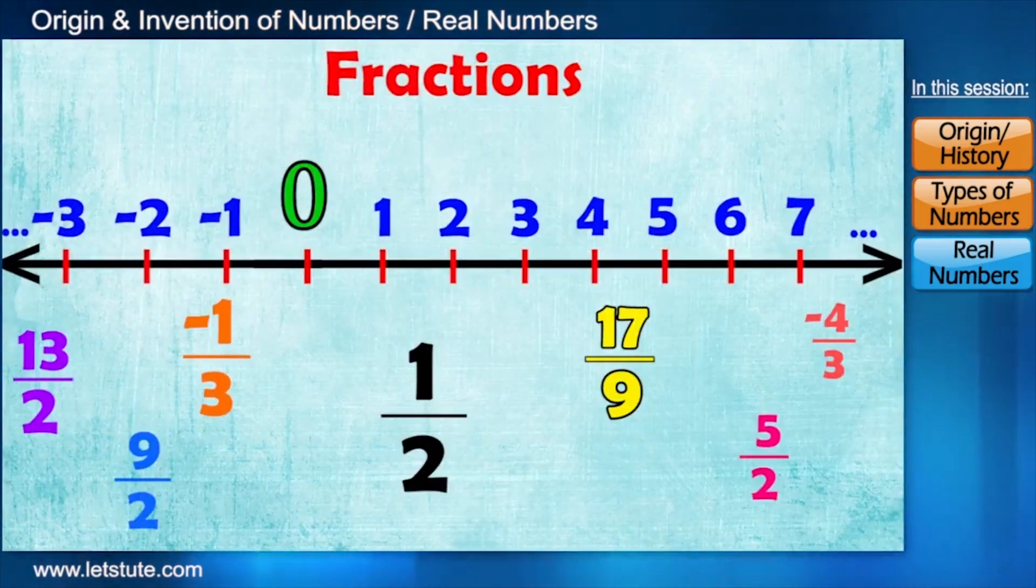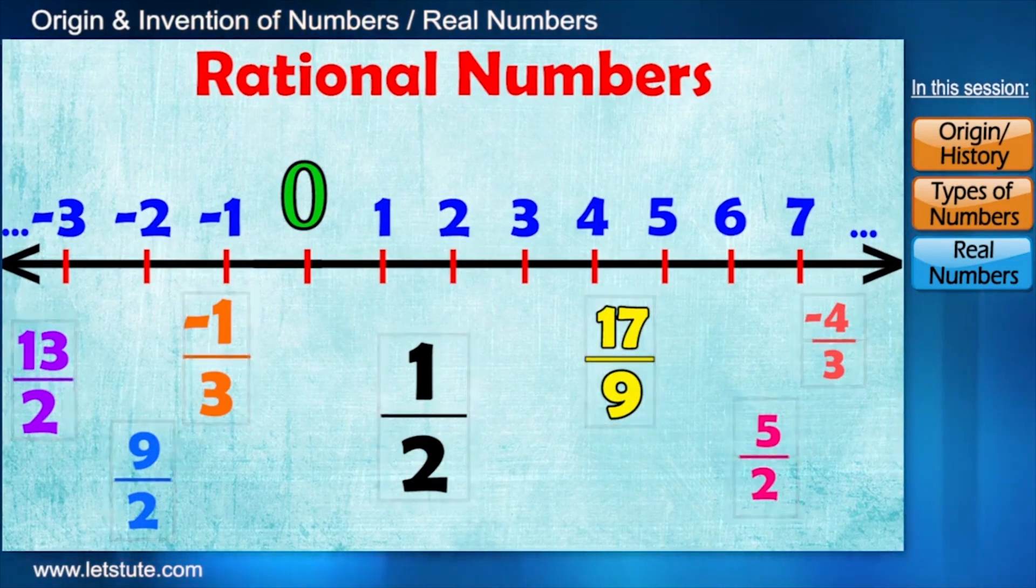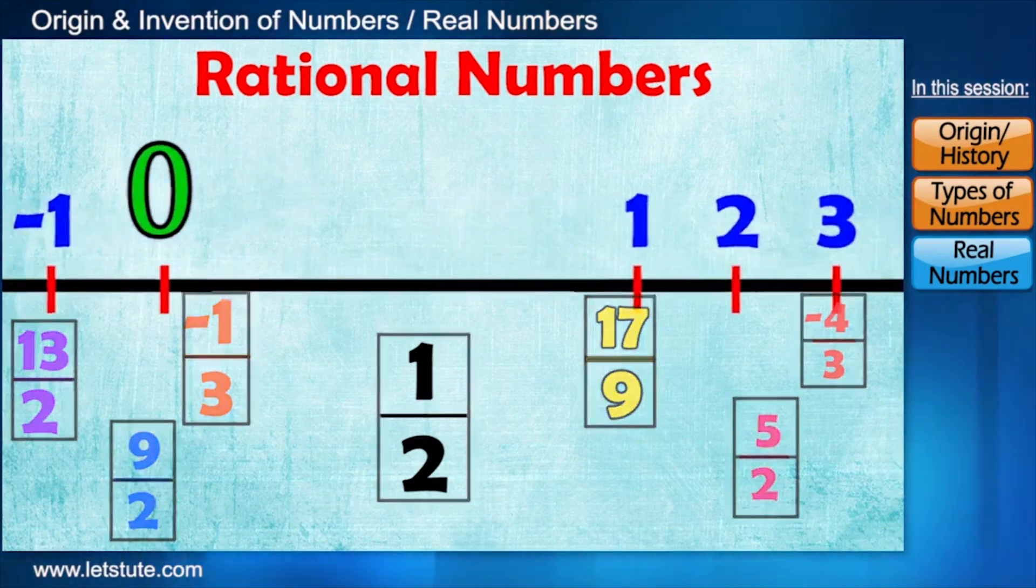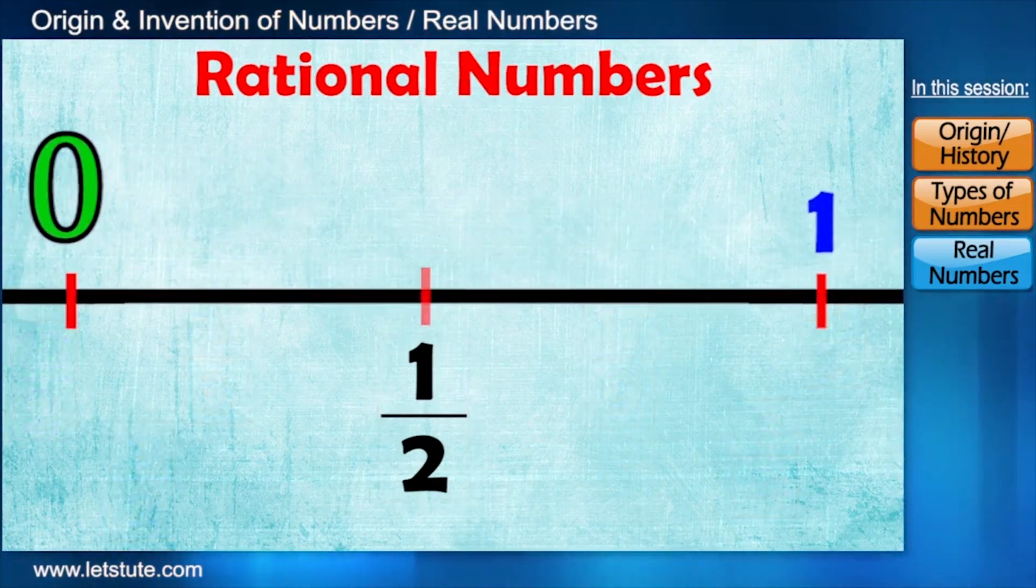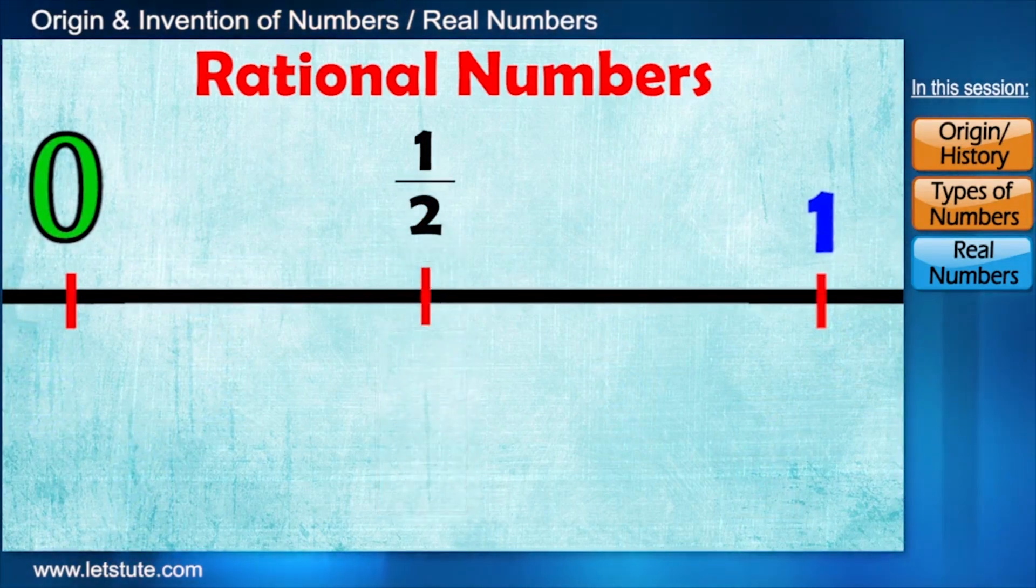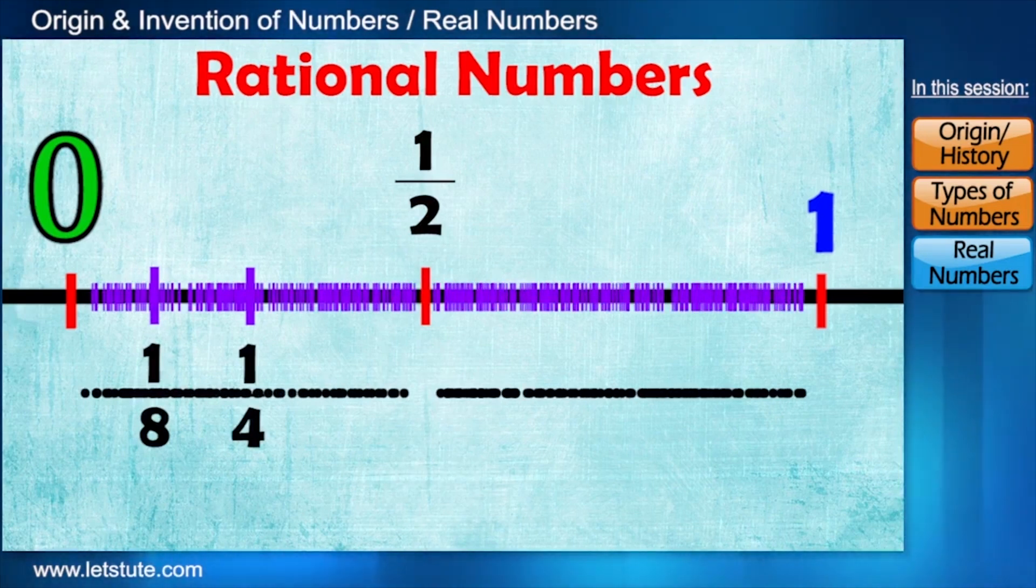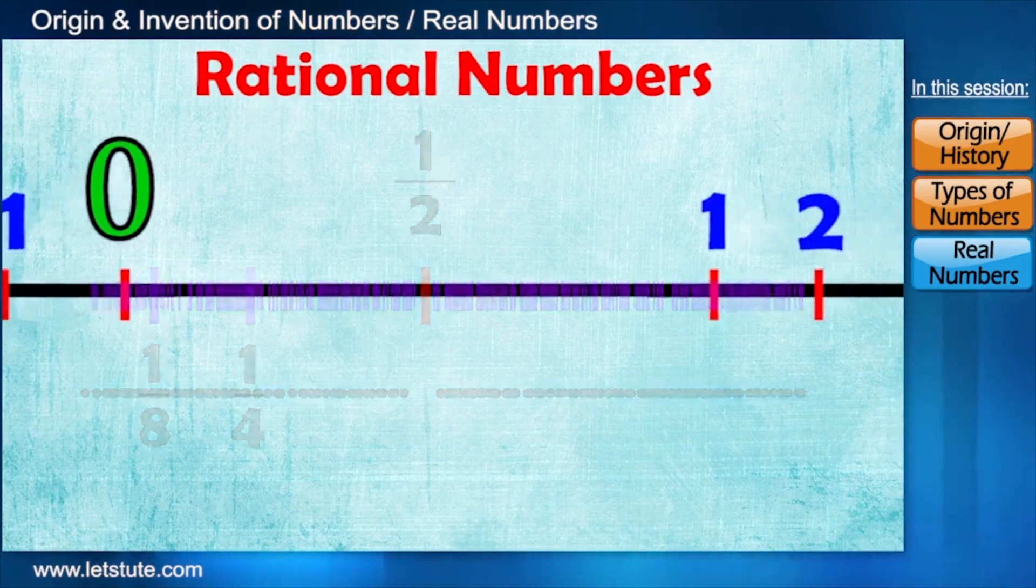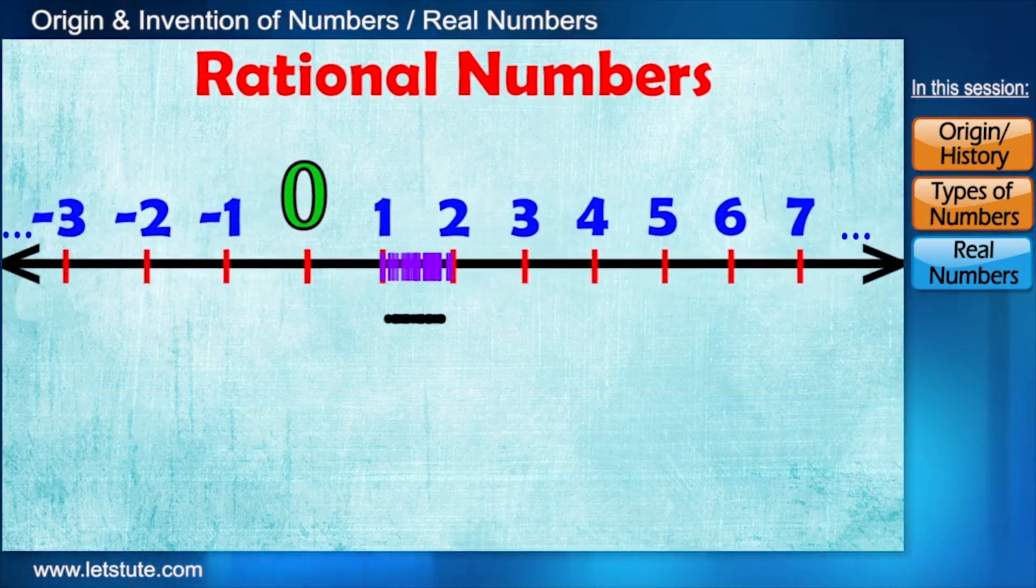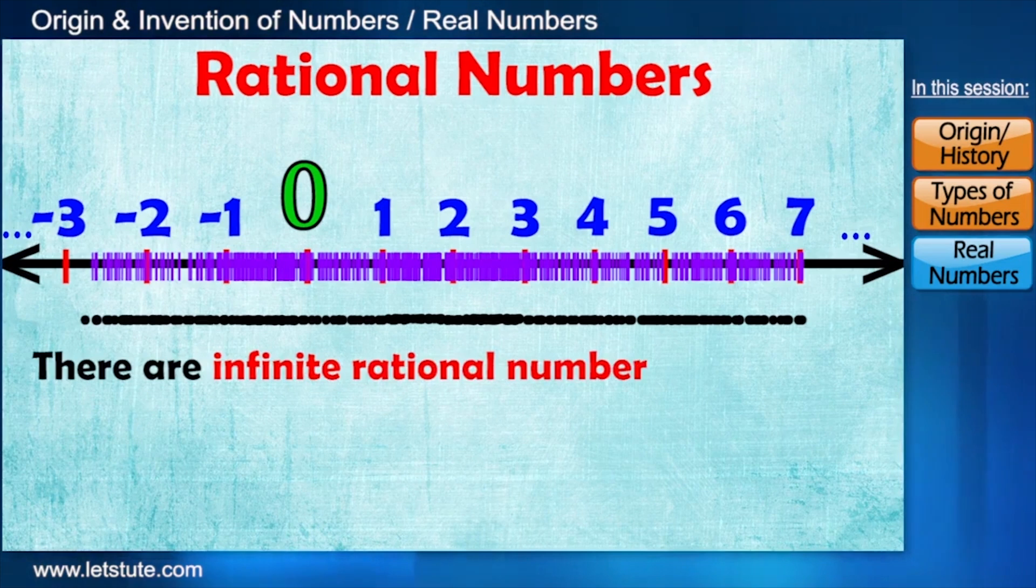So friends, such fractional numbers are called rational numbers because they are ratio of integers. Let's now zoom 0 to 1 unit path. Between 0 and 1, we have number half exactly in the middle. Then between 0 and half, we have 1 by 4, then 1 by 8. And like these, there are many numbers between 0 and 1, which we even can't count. And same will happen between 1 and 2, 2 and 3, minus 1 and 0, and so on. And therefore, we conclude that there are infinite rational numbers on this line.